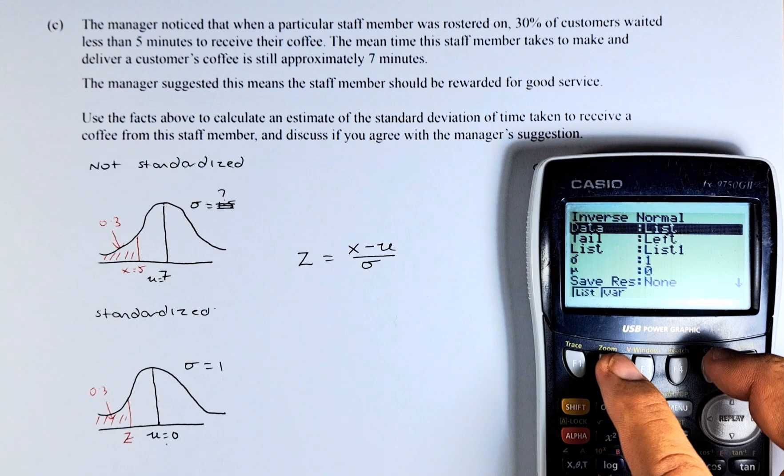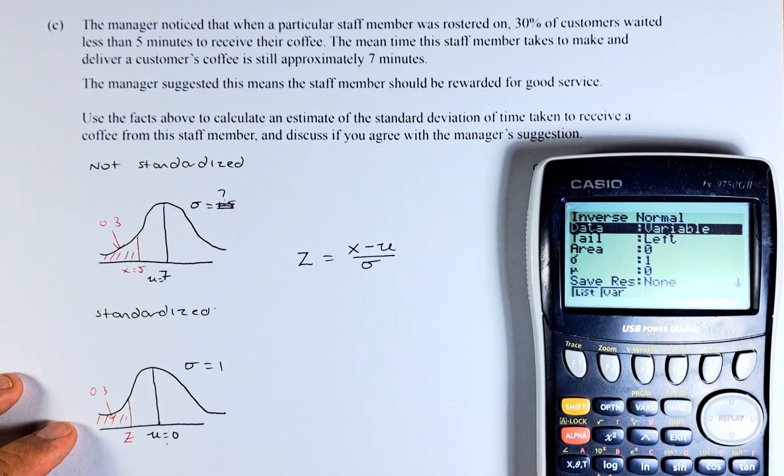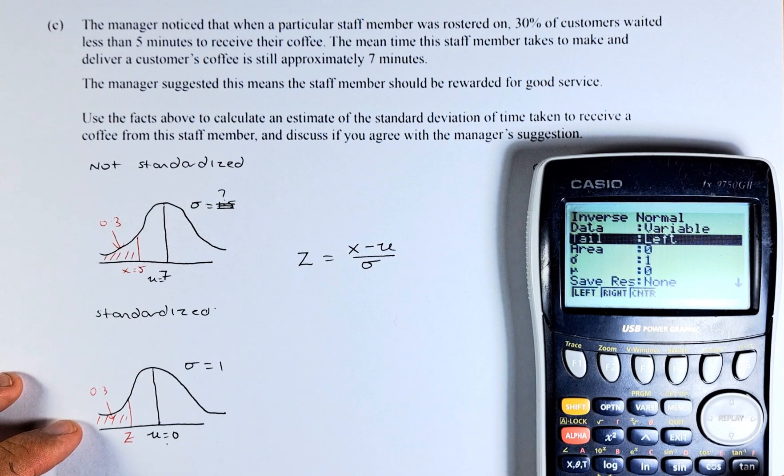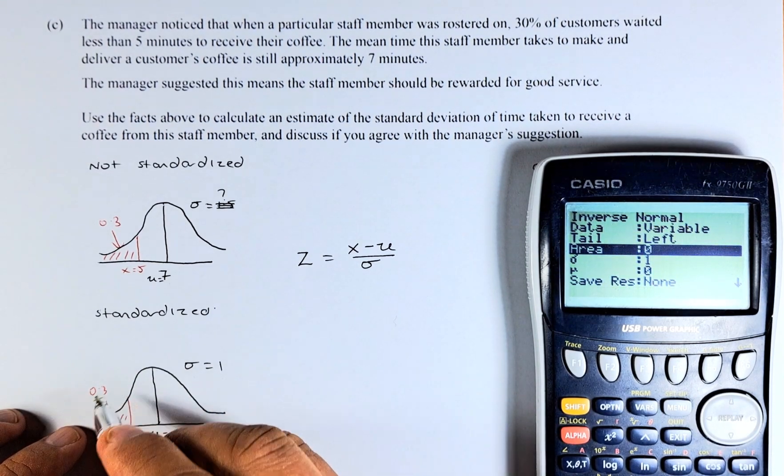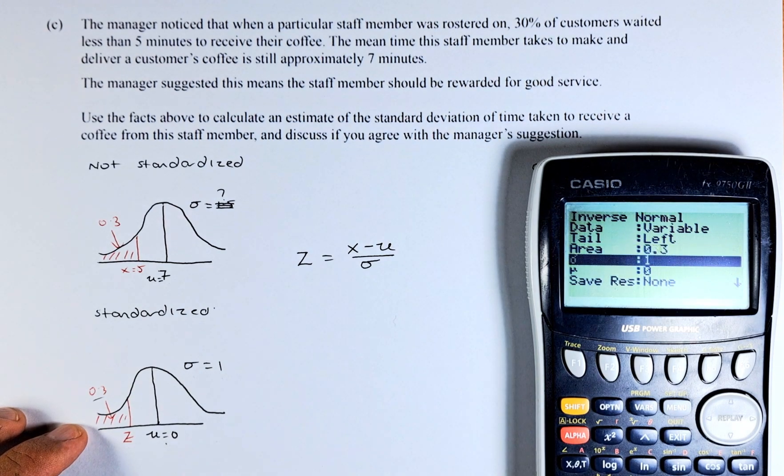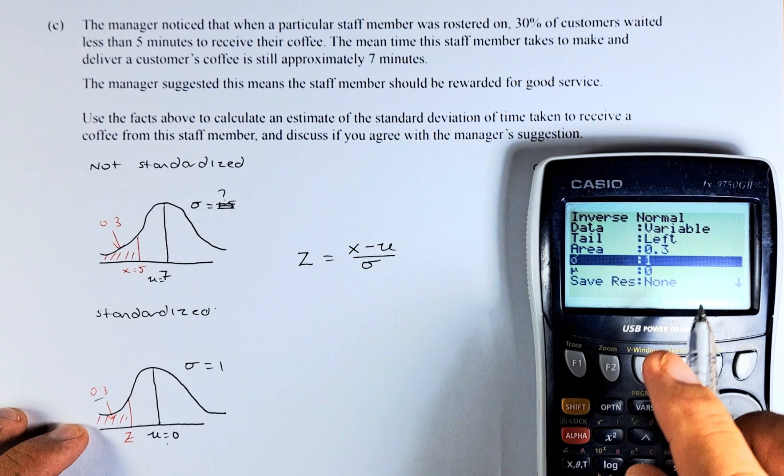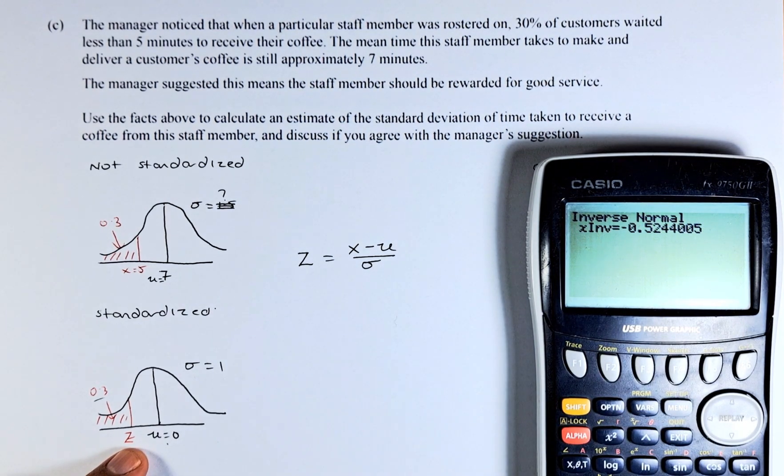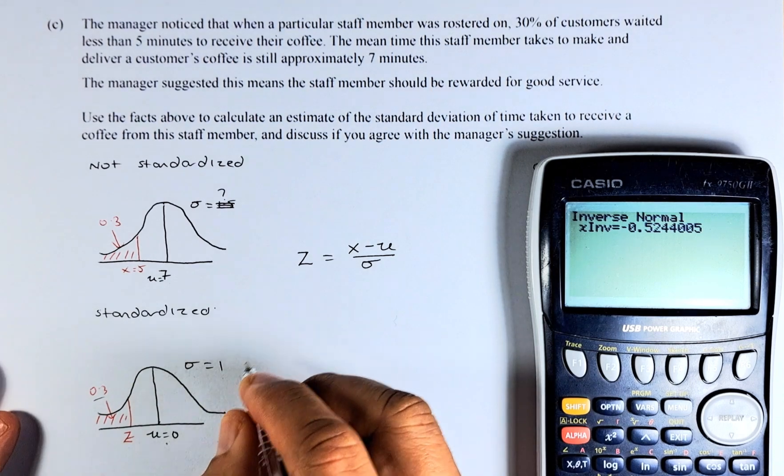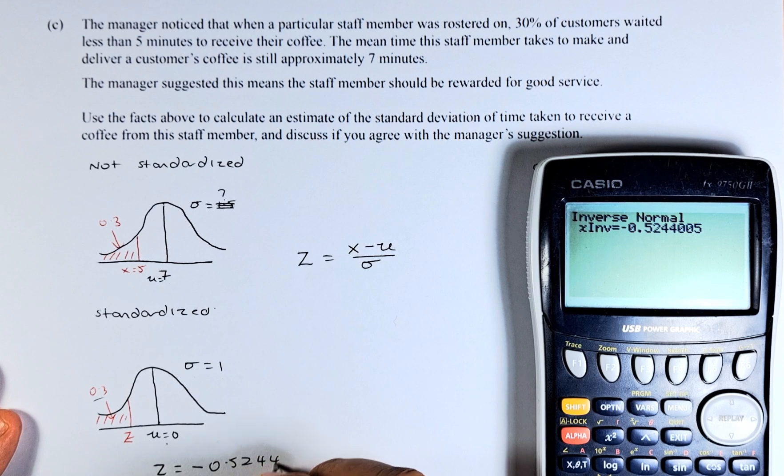We need to go to variable, so F2. The tail is on the left. Can you see it's on the left? We're going to put left, so it's already left. So we're going to execute. And then now area. The area is the probability 0.3. Put in 0.3. And remember, we are working on standardized, so sigma is 1 and nu is 0. Enter everything and press enter. And the answer is going to be Z equals negative 0.5244.